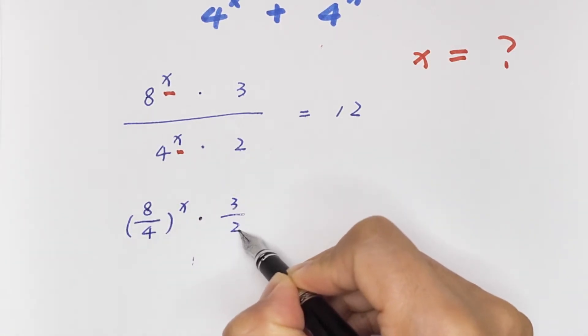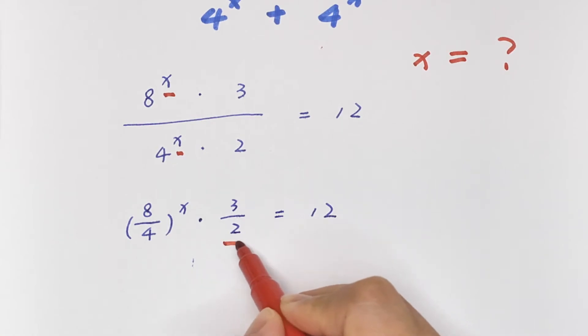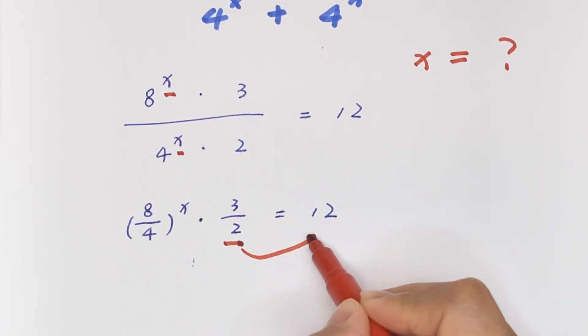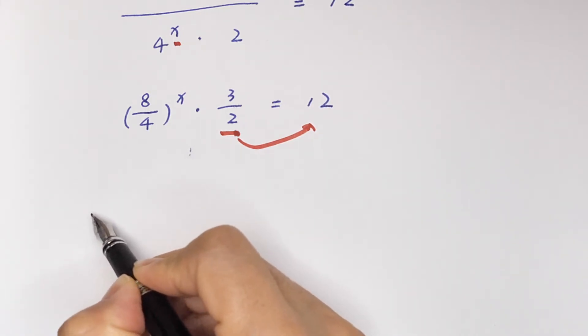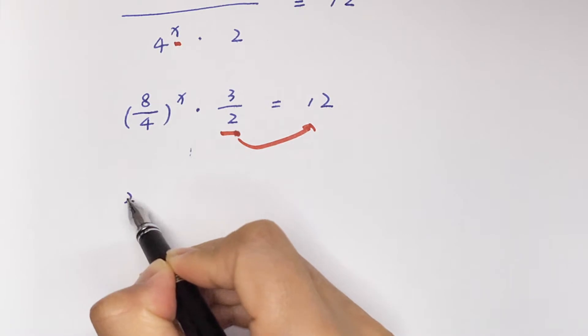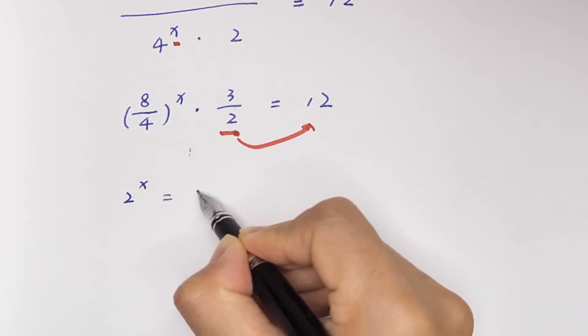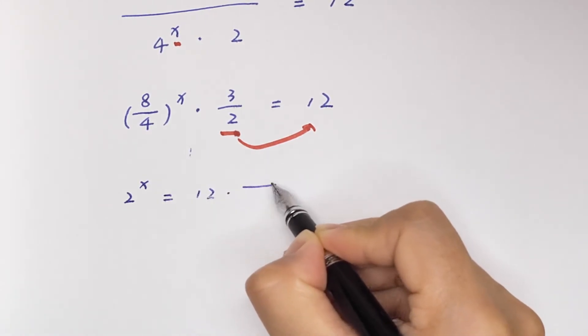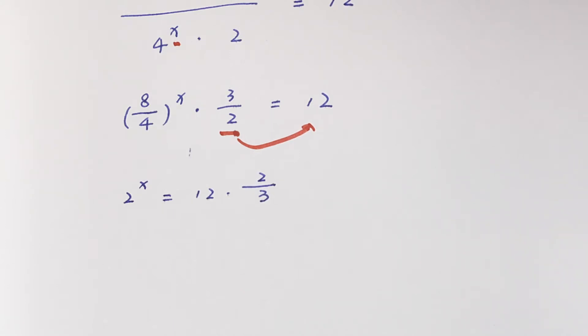Then take this to the right side, so this will cancel. Then it will be 8 over 4 is 2^x is equal to 12 times 2 over 3.